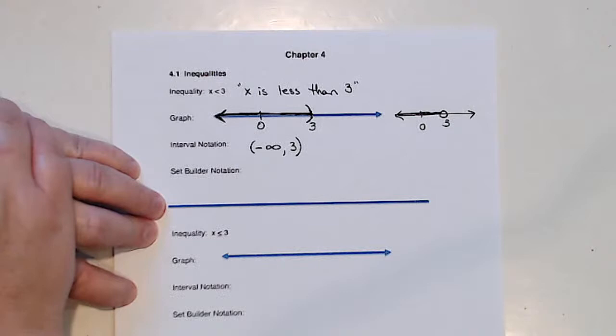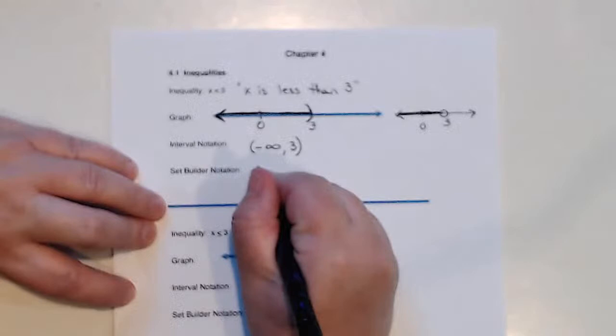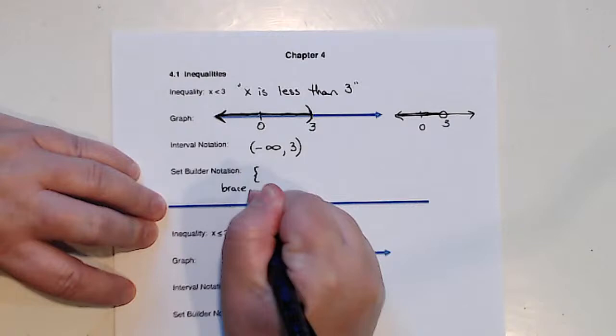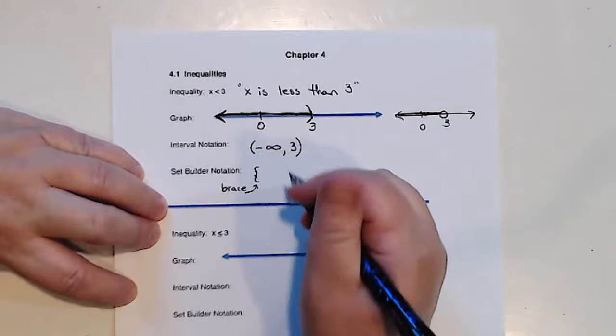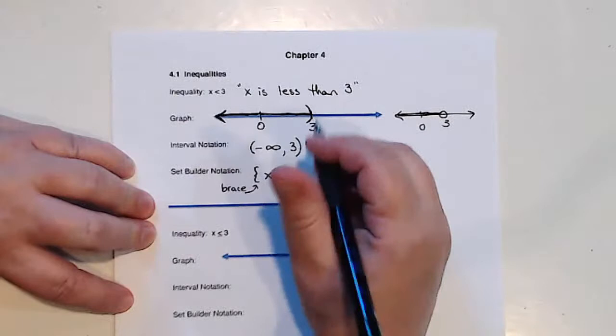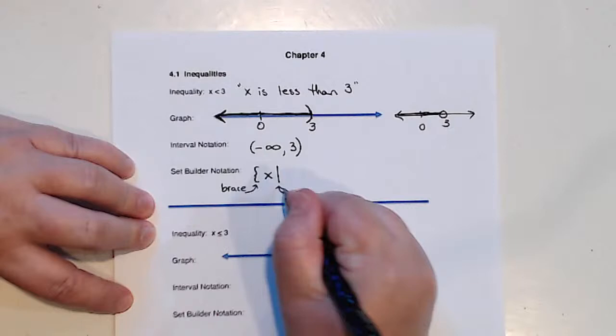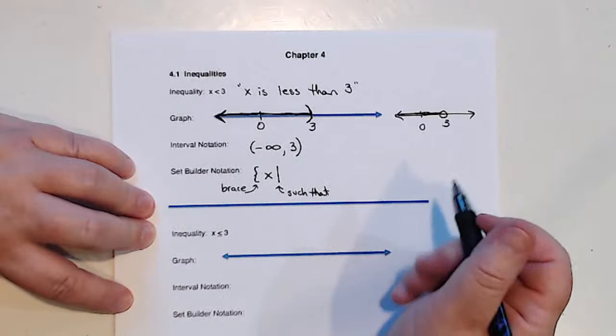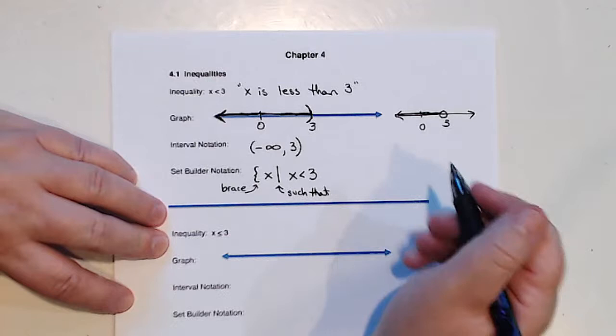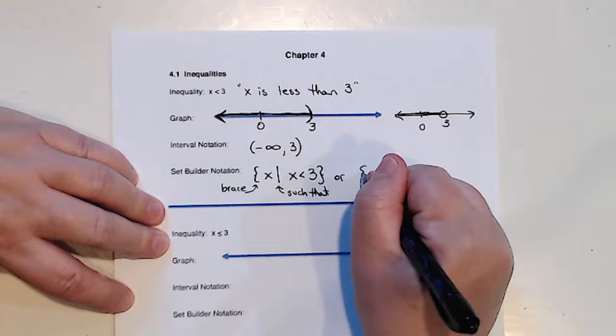Now, set builder notation is the one thing here that I think is most likely to be new for most people. Everybody has a different style. You start with a brace. And then there's a lot of different ways to do this. I'm going to try to keep it fairly simple. I'm going to say x because x is our variable. Then I'm going to put a line in. It's a pretty long line. The line is pronounced such that, which is another way of saying so that. And then I'm going to write in the inequality x is less than 3. Now, I could finish it, and it could be done.